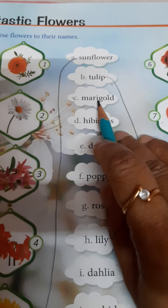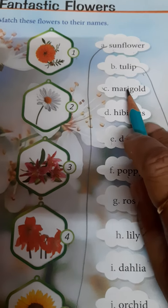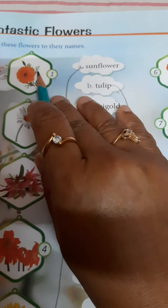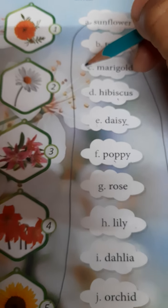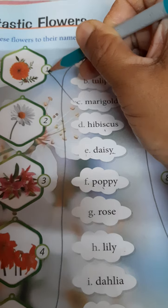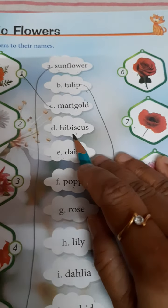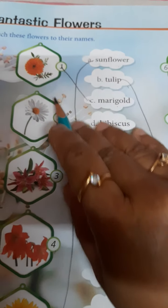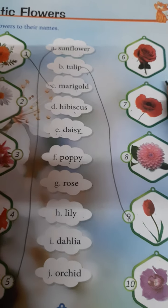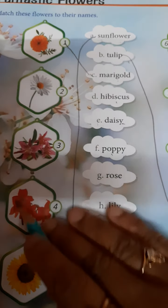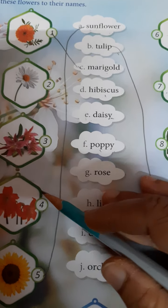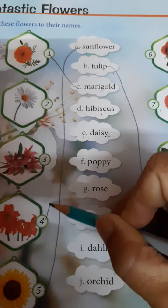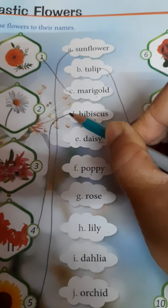Third is marigold. Does everyone know which one is marigold? This one is marigold. So you join the flower to their name. Next is hibiscus. Which one is hibiscus? This one is hibiscus. So you match the flower to their name.